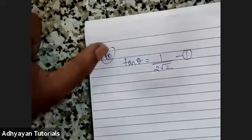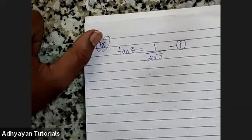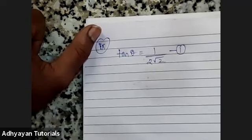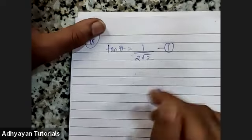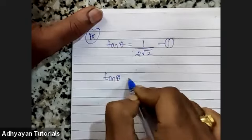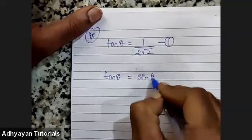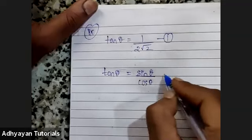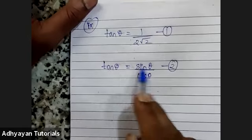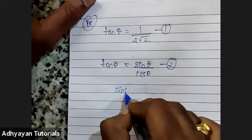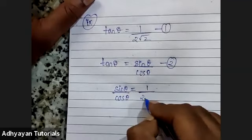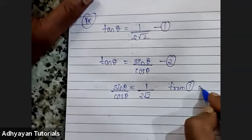Again there are two options: either the identity method or the triangle method. I would like to go ahead with the identity method here. In order to use identity, the first thing is that tan θ = sin θ upon cos θ — I mark it as equation 2. Comparing equation 1 and 2, since left-hand sides are equal, right-hand sides are also equal: sin θ upon cos θ = 1 upon 2√2, from equations 1 and 2.